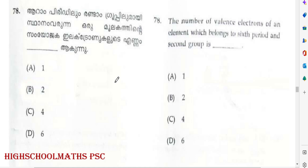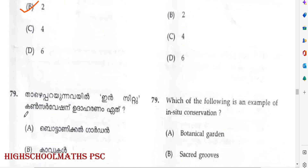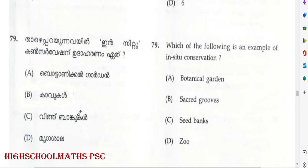Question: The number of valence electrons of an element which belongs to the 6th Period and 2nd Group is what? Answer: Option B — 2. In-situ Conservation: which of the following is an example? Answer: Option B — Sacred Groves.